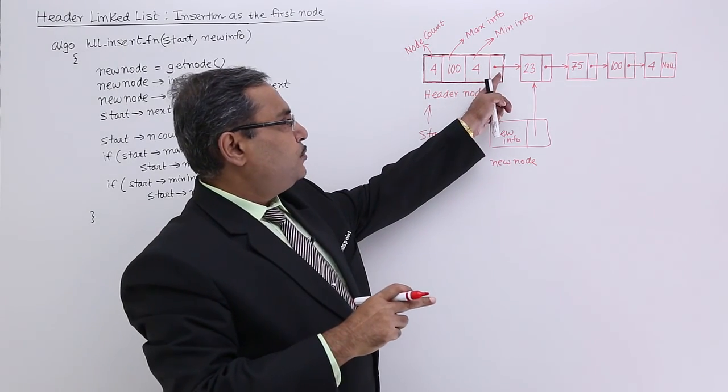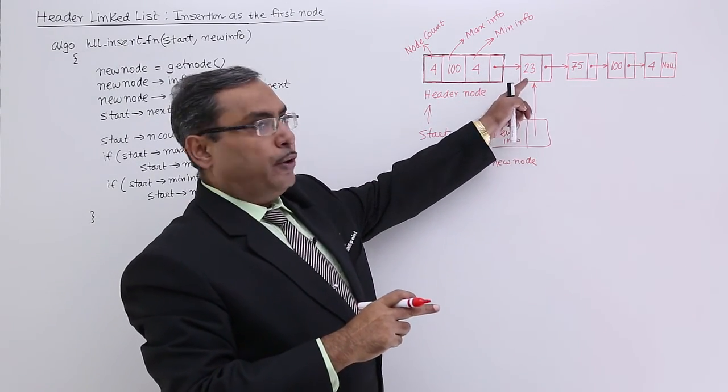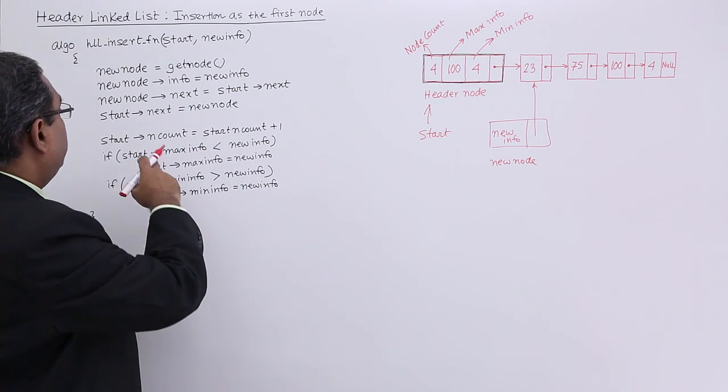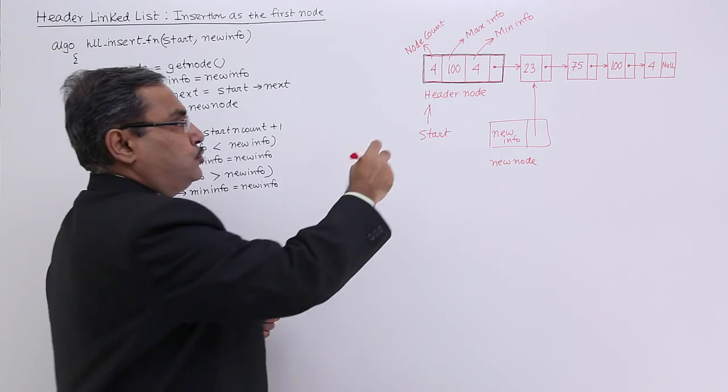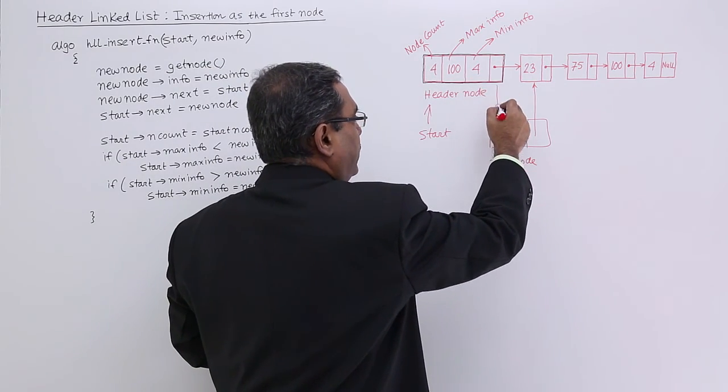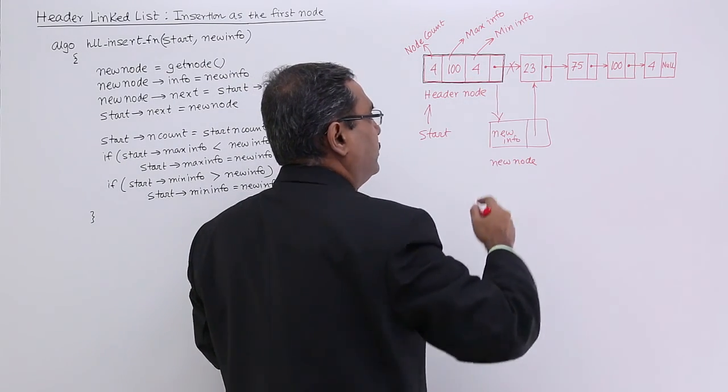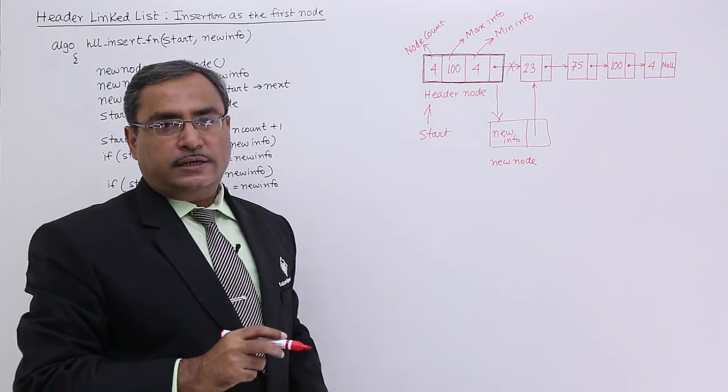So now it will be pointing to this particular node, and then we are having start implies next equals new node. So start implies next will be pointing to this new node. So this particular point will get cancelled. So now in this way it has got inserted.